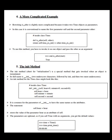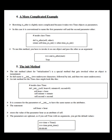The fourth topic is a more complicated example. Rewriting is_after is slightly more complicated because it takes two time objects as parameters. In this case, it is conventional to name the first parameter self and the second parameter other. To use this method, you have to invoke it on one object and pass the other as an argument.